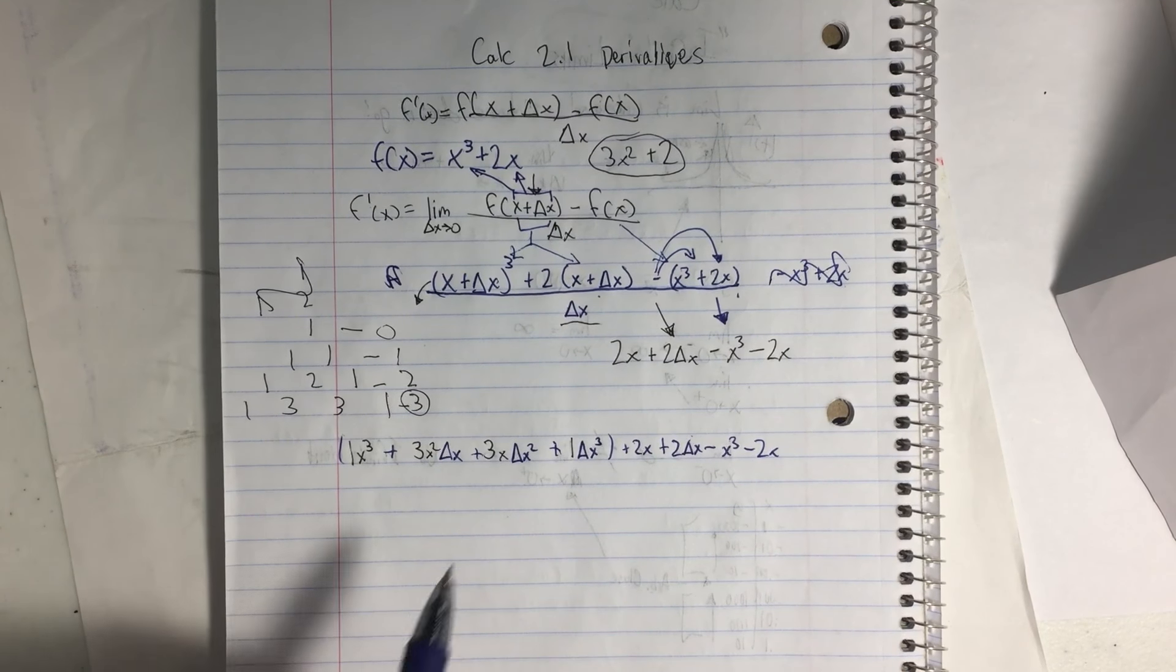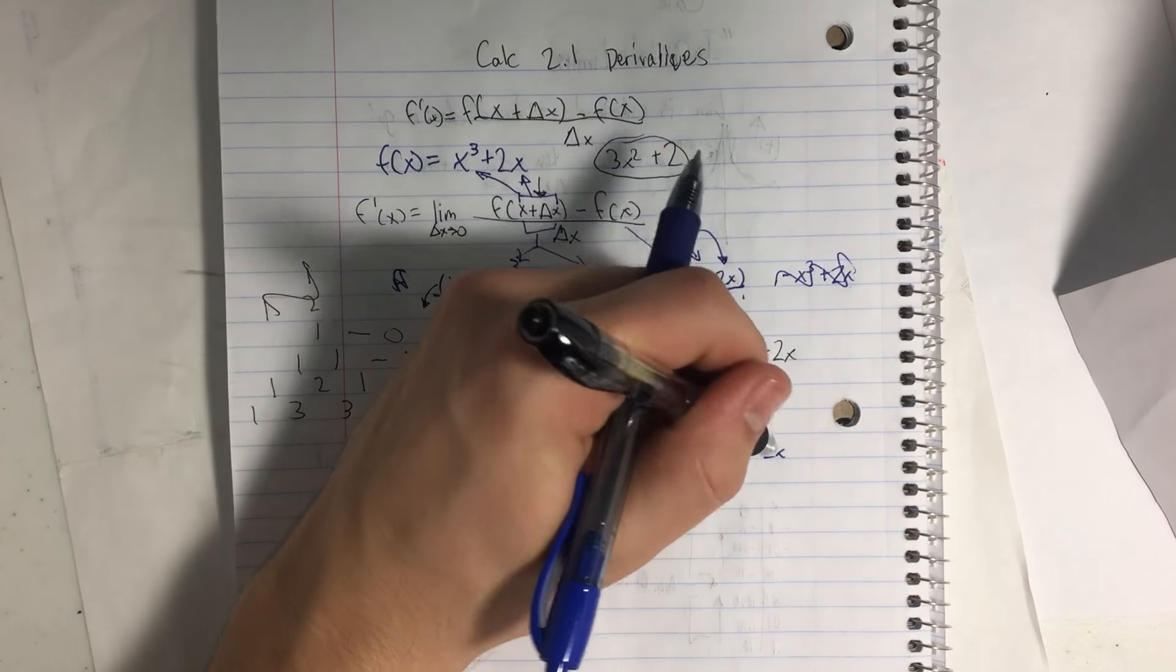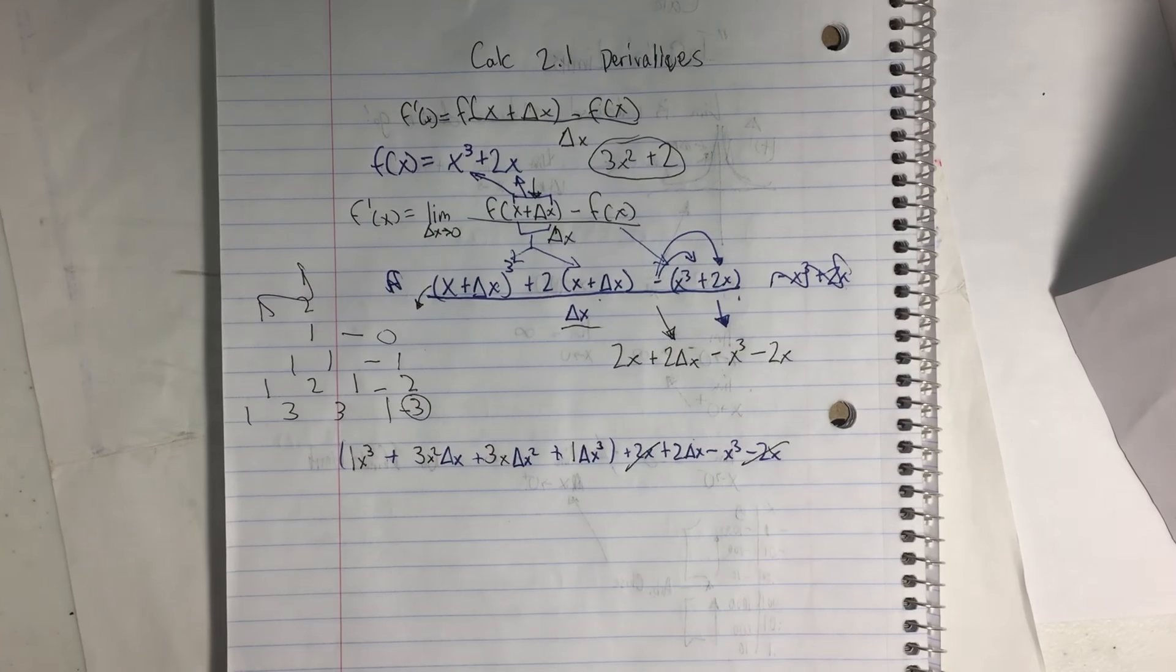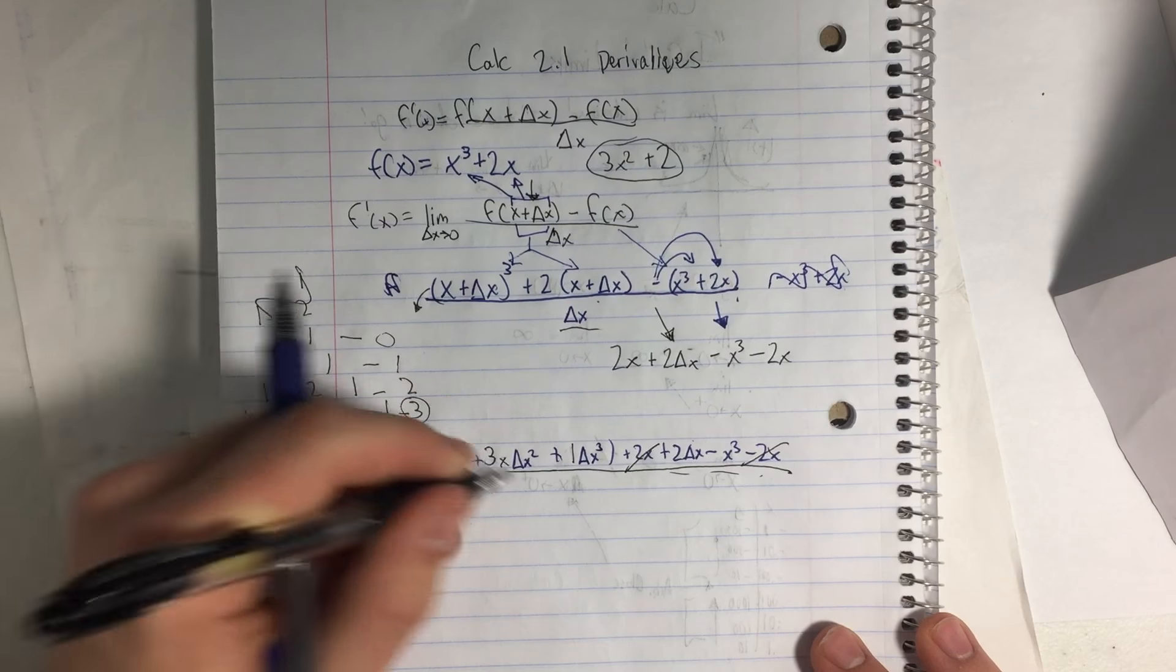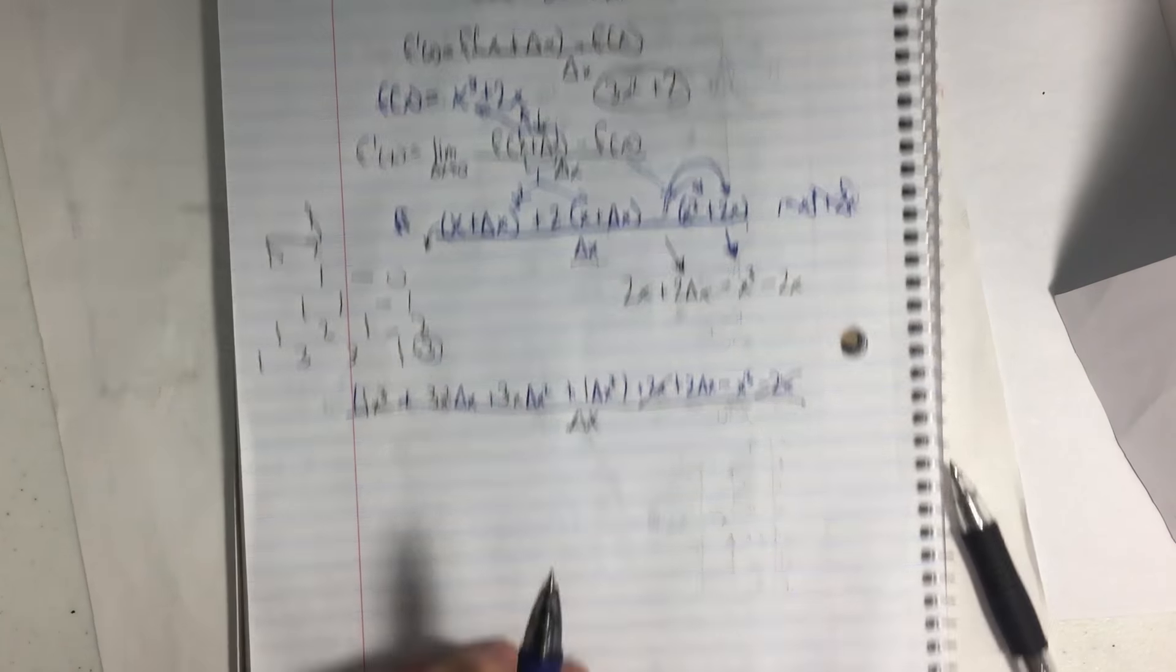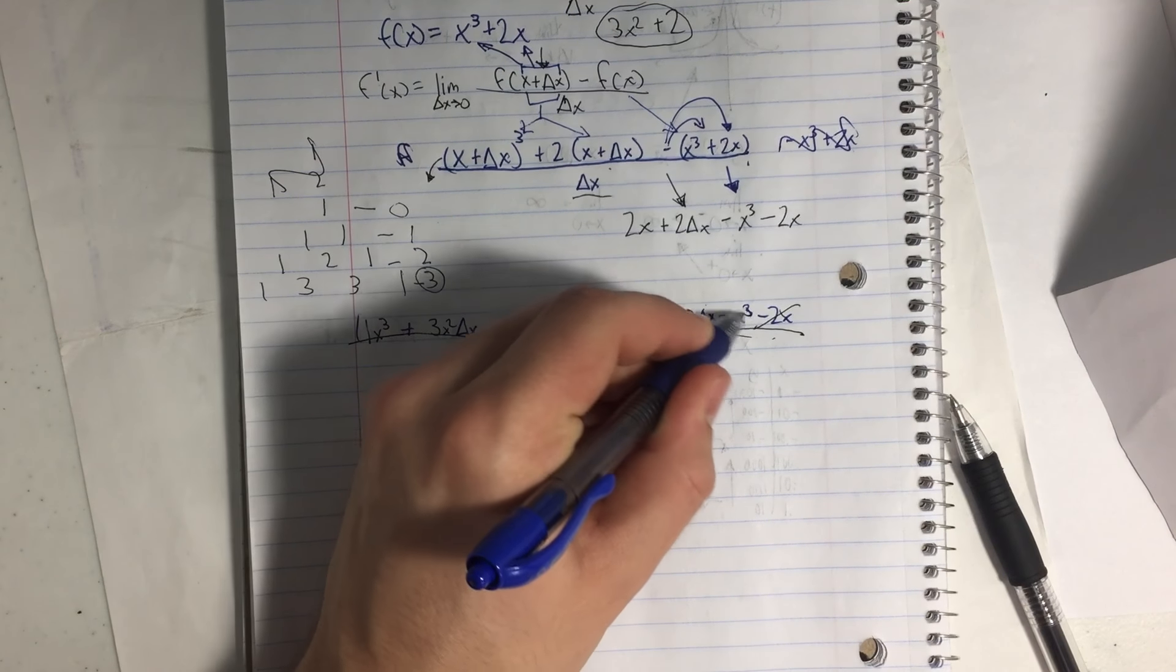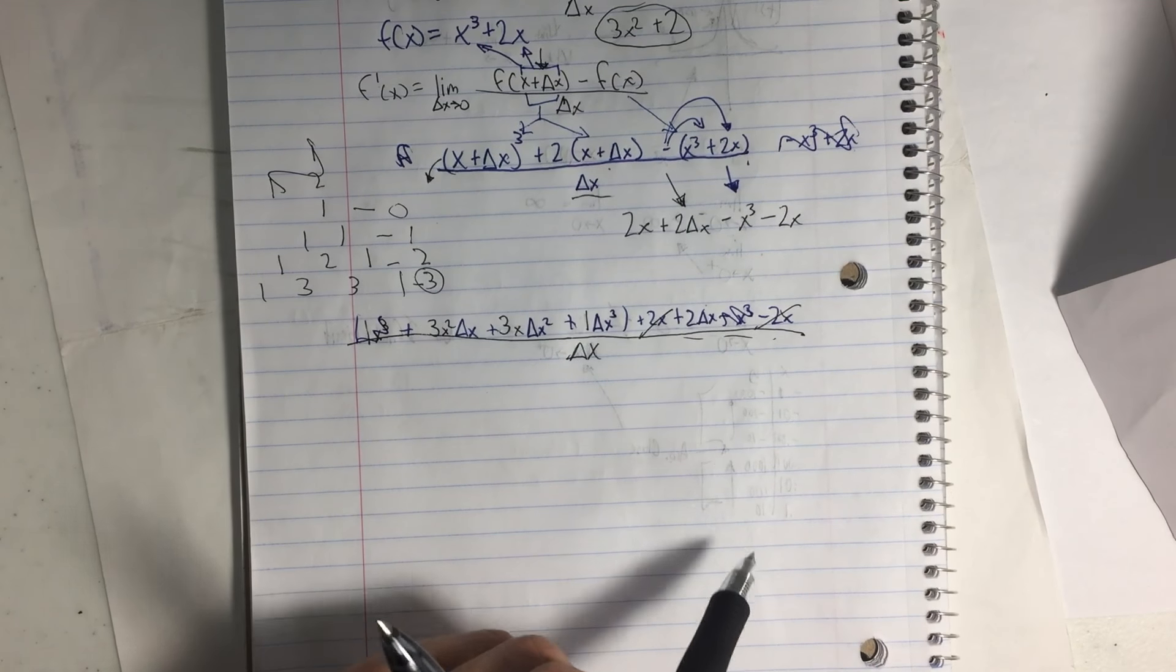So now that all these terms are adding, let's see if we can get rid of anything. So the 2x's right here, 2x and 2x, right, they cancel out. And still remember the denominator. We'll draw it under here. We're still all over Δx. Okay. And so let's see if we have anything else. Oh, here's an x³. And the x³ over here. That'll cancel out.